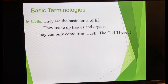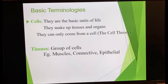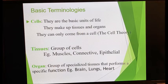By definition, cells are the basic units of life which make up tissues and organs. By the cell theory, a cell can only come from another cell. Tissues are a group of cells — we have muscle, connective, and epithelial tissues. Organs — examples include the brain, the heart, and the lungs.